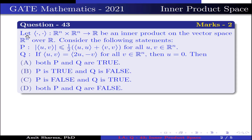The question is: let the inner product from Rn cross Rn to Rn be an inner product on vector space Rn over R. Consider the following statements. Statement P: the mod of inner product ⟨u, v⟩ is less than or equal to 1/2 times inner product ⟨u, u⟩ plus inner product ⟨v, v⟩, for all u, v belonging to Rn.